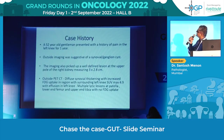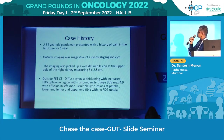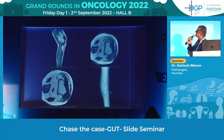Case one: a 52-year-old gentleman who presented with a history of pain in the left knee for one year. Outside imaging was suggestive of a synovial ganglion cyst. The imaging also picked up a well-defined lesion at the upper pole of the right kidney measuring 3 by 2.8 centimetres, which is a T1 tumour. Outside PET-CT showed diffuse synovial thickening with increased FDG uptake in regions surrounding the left knee, with multiple lytic lesions at the patella, lower end of femur, and upper end of tibia with not much FDG uptake.